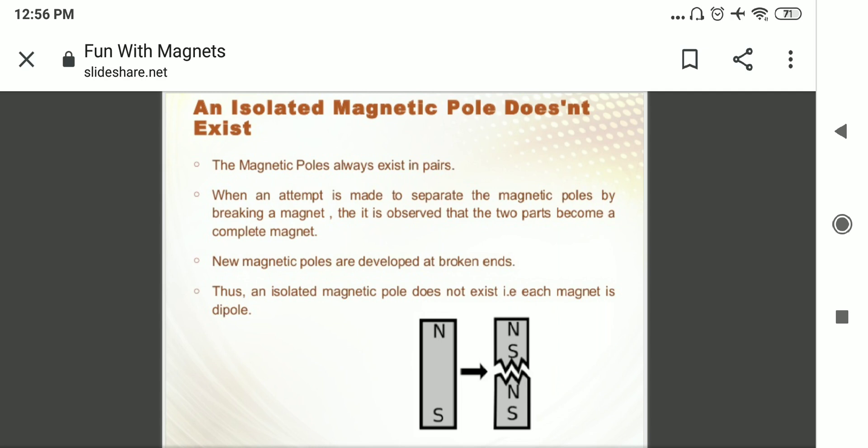Suppose if I break this magnet in two parts, then what will be there? However, it breaks in two parts and when it breaks in two parts, again that two parts behave like a magnet.